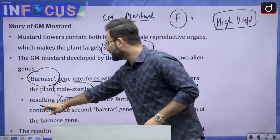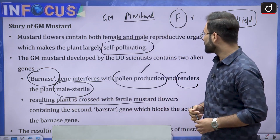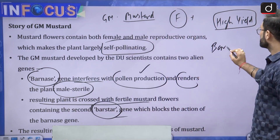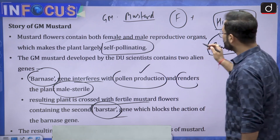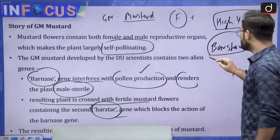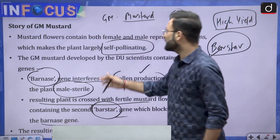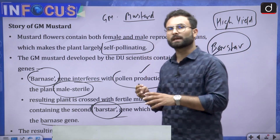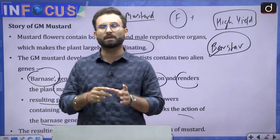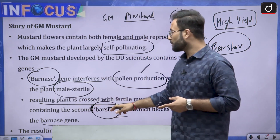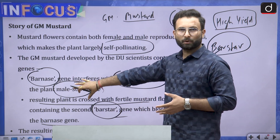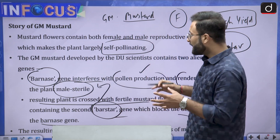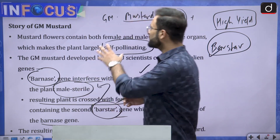The second gene is the bar star gene. The resulting plant is crossed with fertile mustard flowers containing the bar star gene. The function of the bar star gene is to block the action of the barnese gene from the previous plant. So there are two genes: barnese sterilizes the male reproductive organ, and bar star neutralizes the effect of the first one. The resulting variety is a high-yielding variety — that is basically your GM Mustard.